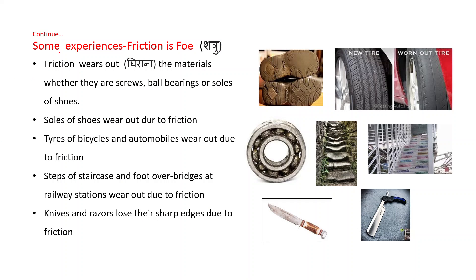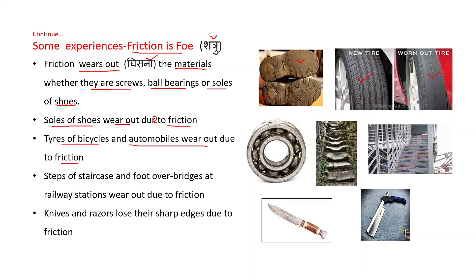Now we will discuss some experiences in which friction is undesirable. Friction wears out materials — whether they are screws, ball bearings, or soles of shoes. The sole of a shoe is new when unused, but when continuously used it wears out. Tires of bicycles and automobiles also wear out due to friction, as do ball bearings when used continuously.